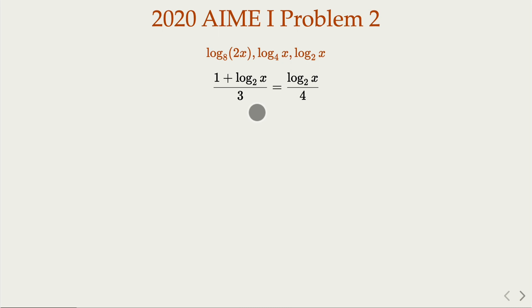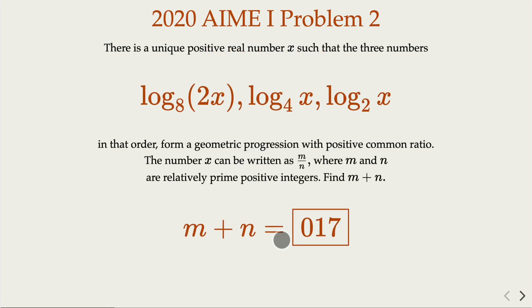Now you can have a linear equation with unknown variable log 2x. Solve for that, negative 4, and x is 1 over 16. And in the typical AIME style, you write the answer 1 over 16. The summation would be 17. You write it as 0, 1, 7.